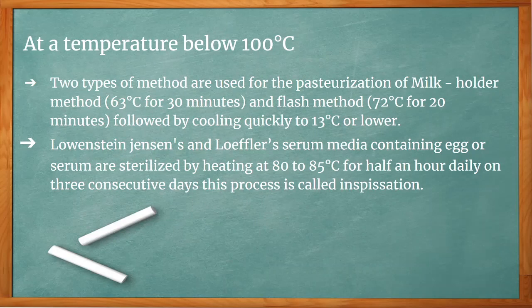At temperatures below 100 degrees Celsius, two methods are used for pasteurization of milk: the holder method at 62 degrees Celsius for 30 minutes, and the flash method at 72 degrees Celsius for 20 minutes, followed by rapid cooling to 13 degrees Celsius or lower.